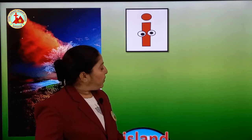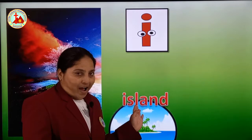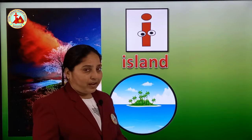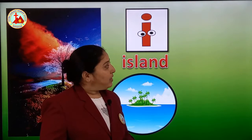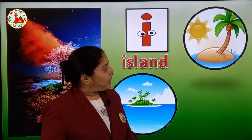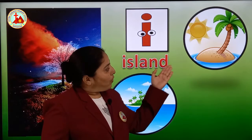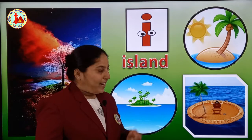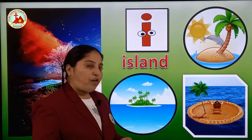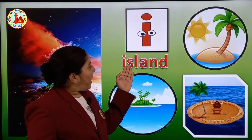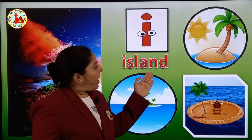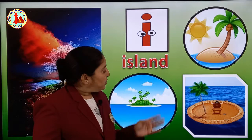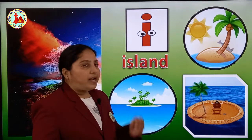Now next is I for island. See how beautiful it is. You know what is island? We have already learned it in the capital letters. I for island. Now let's see the spelling: I, S, L, A, N, D — island. Here are the different pictures of island.